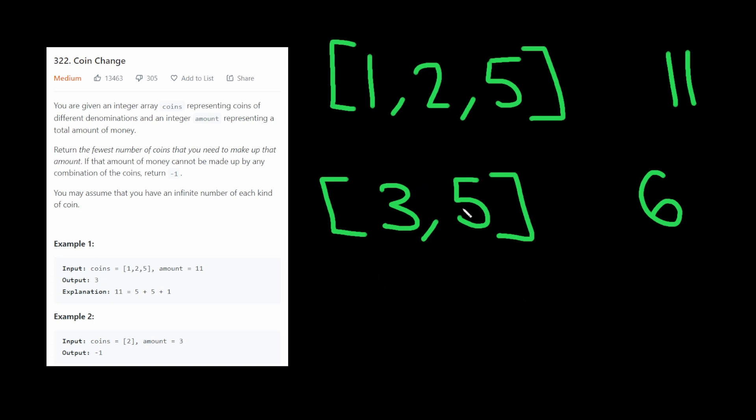What we really have to do is we have to try all possible combinations. So we're at this 6 here, so current amount is 6, and we have to see if we subtract 5 from this, so it becomes 1, can anything go into that 1? No.